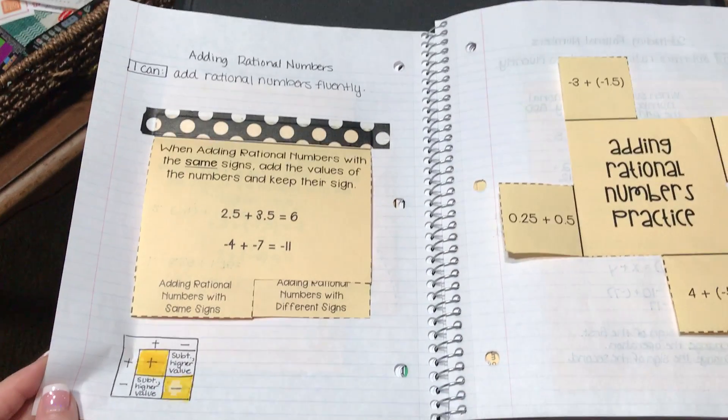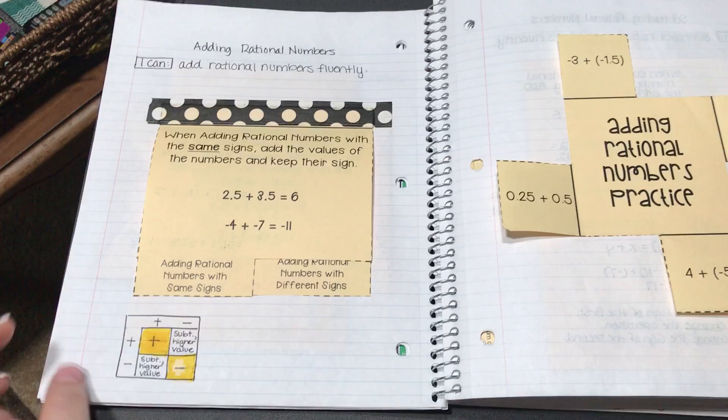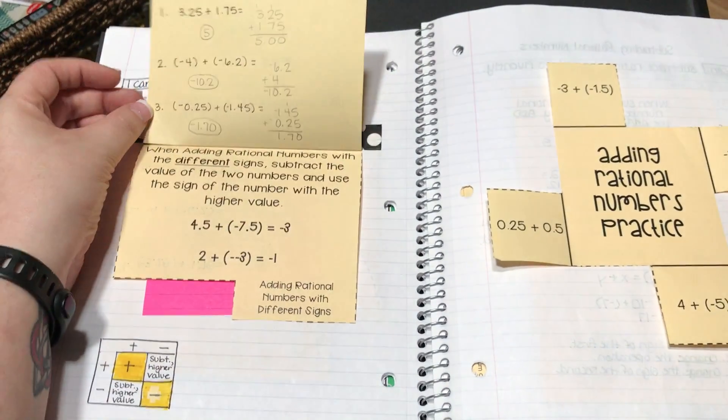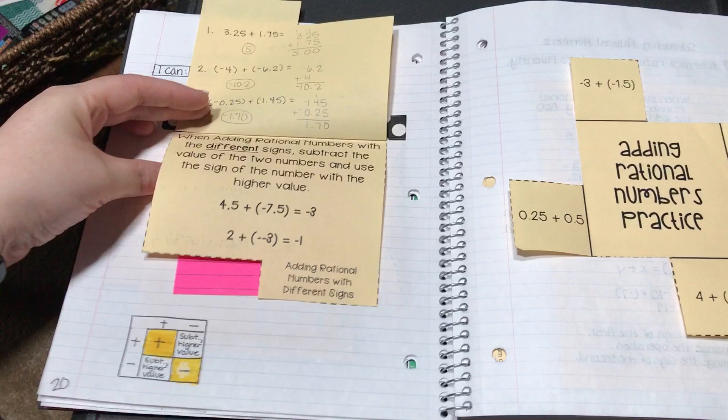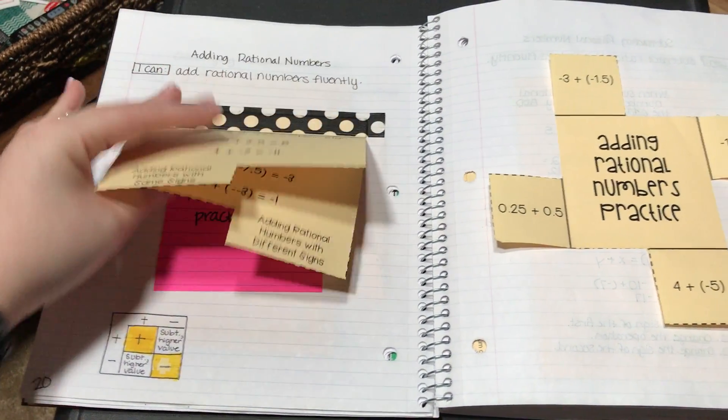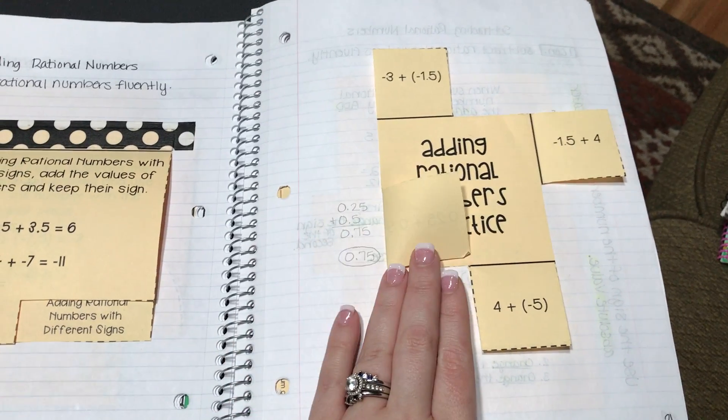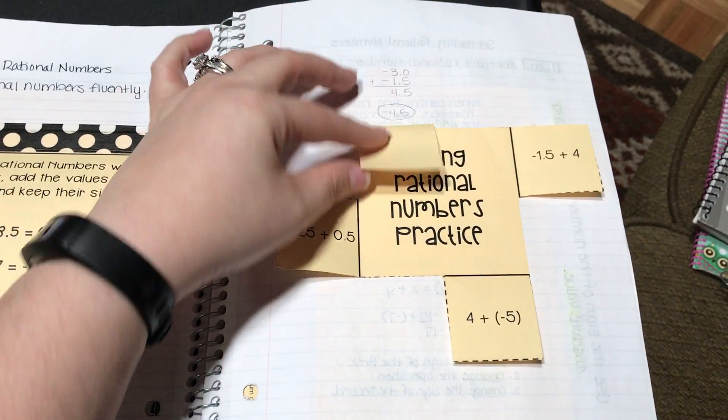The next lesson is adding rational numbers with the same and different signs. The notes are on top and then some practice problems on bottom, again notes on top, practice problems on bottom, and then even more practice below. The output is this little pinwheel flippable where they just write their answers and show their work underneath.